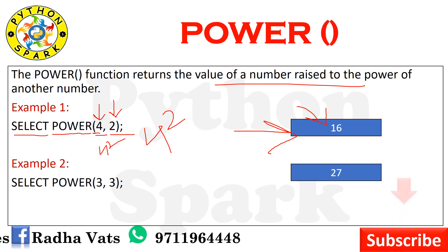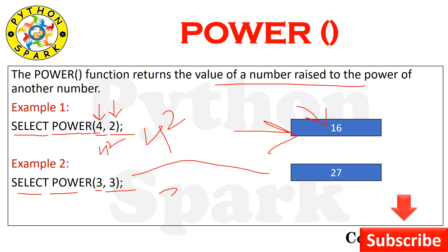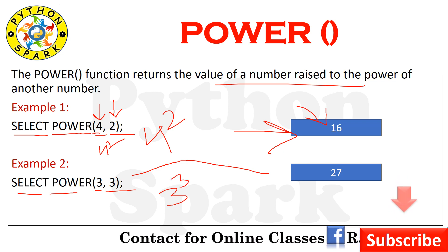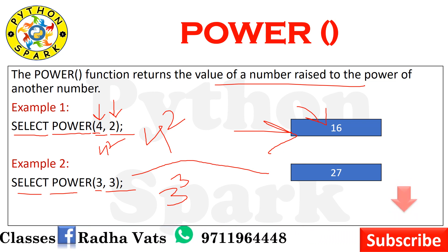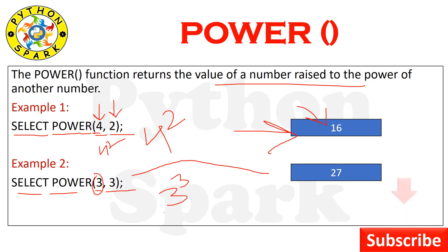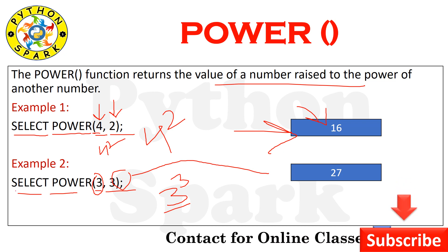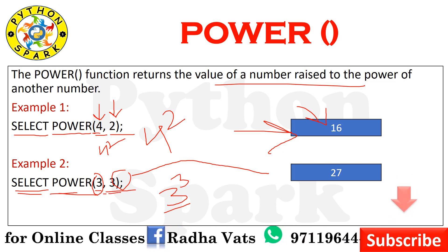Next example: SELECT POWER(3, 3). That means 3 raised to the power of 3. And then SELECT POWER(2, 3), and SELECT POWER(3, 2).